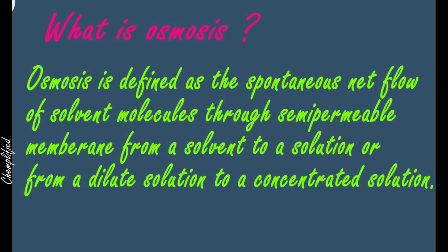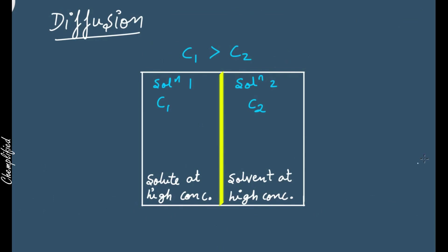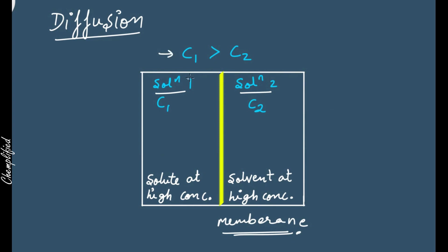Before we go to osmosis, we should know about one other thing, that is diffusion. What is the meaning of diffusion? Consider this diagram — there is solution 1 and solution 2, separated by a membrane. We are not talking about a semipermeable membrane; this is just a low-quality membrane. What this membrane does is it allows the solute as well as solvent particles to pass through it.